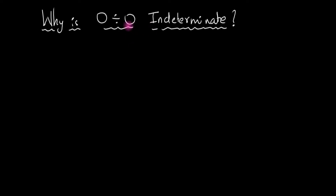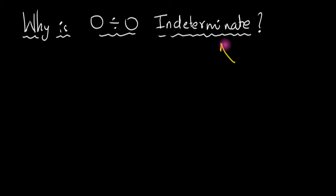Why is zero divided by zero indeterminate? More importantly, I want to know what is the meaning of this statement — what do we mean when we say that taking zero divided by zero gives an indeterminate form?